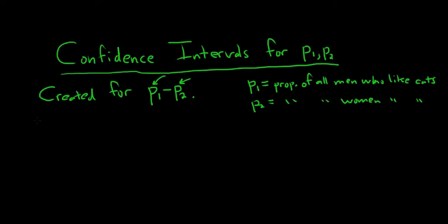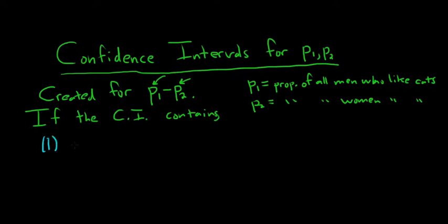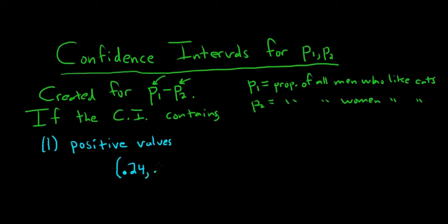Let's look at the three possibilities. Case one: the confidence interval contains only positive values. For example, say you run the problem in software — StatCrunch, Excel, or whatever — and the answer you get is .24 to .47. That's your 95% confidence interval for P1 minus P2.